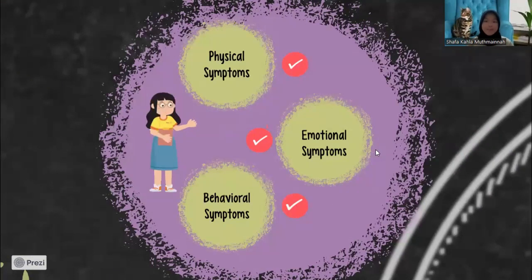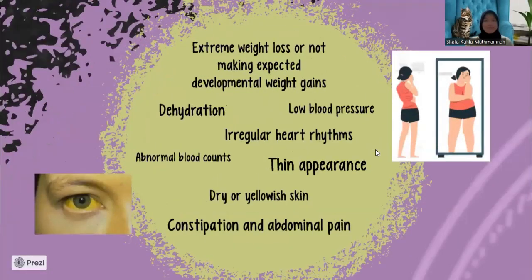After discussing the definition of anorexia nervosa, let's now cover anorexia nervosa symptoms. The general symptom people know is related to starvation or an extremely strong fear of gaining weight or becoming fat. There are three types of symptoms: physical, emotional, and behavioral. The physical symptoms include extreme weight loss or failure to make expected developmental weight gain, fatigue, dehydration, low blood pressure, irregular heart rhythms, abnormal blood counts, thin appearance, dry or yellowish skin, and constipation and abdominal pain. People with this disorder tend to have a high risk of experiencing malnutrition.